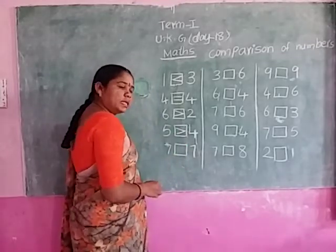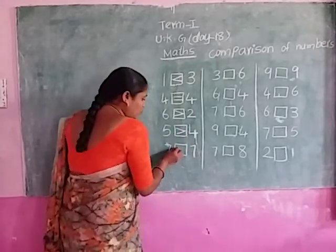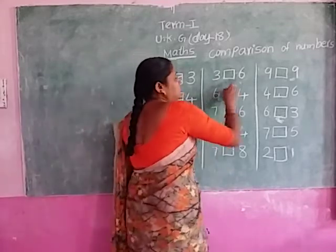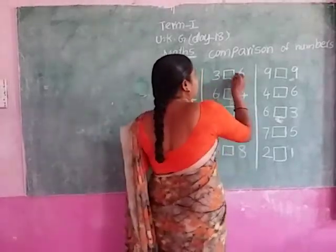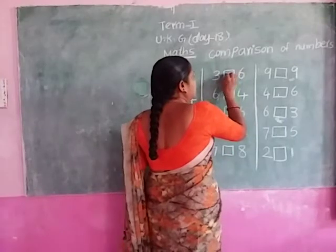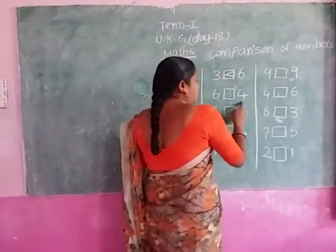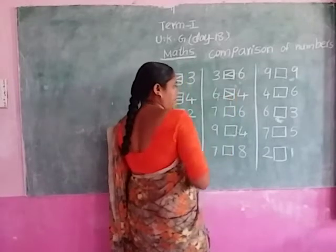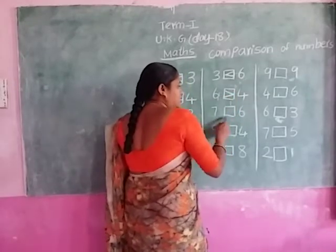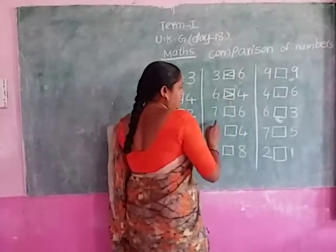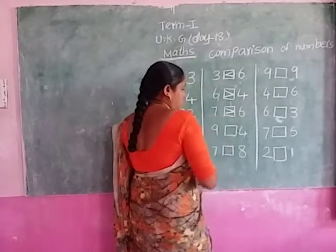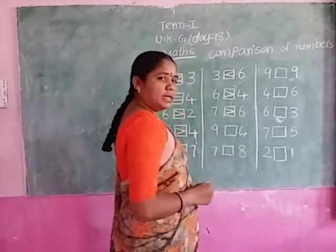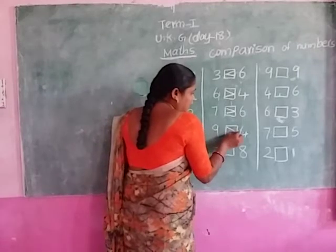Next, three and six. Six is a greater number. Okay, six and four — which is a greater number? Six is a greater number. Next, seven and six — which is a greater number? Seven is a greater number. Next, nine and four — which is a greater number? Nine is a greater number.